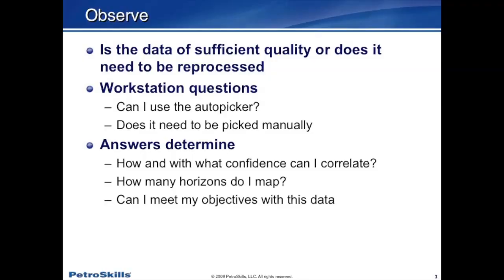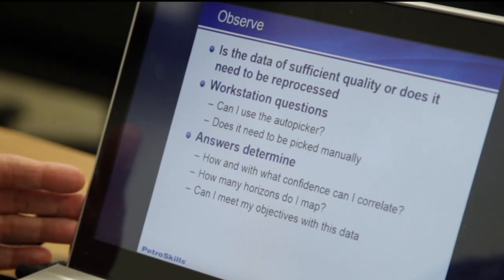Most people nowadays work on workstations. I want to talk about techniques we use to make interpretations on workstations. Some things we need to think about: is the data of sufficient quality? Does it need to be reprocessed? Can I work with this data set as it is, or do I need to send it out and have it reprocessed to hopefully improve the quality? On the workstation, I can pick events manually or I can use the auto picker. The first thing I have to determine is: can I use the auto picker, or am I going to have to use manual picking?